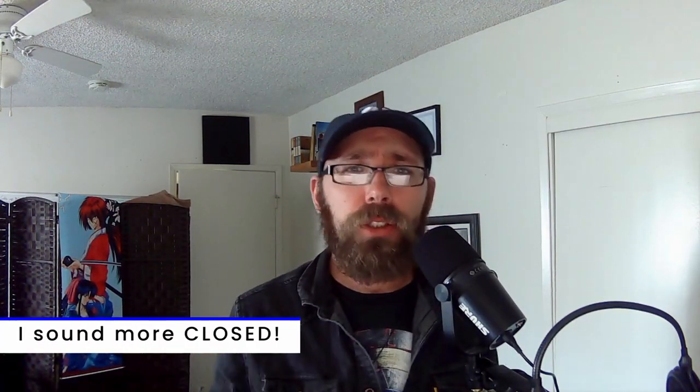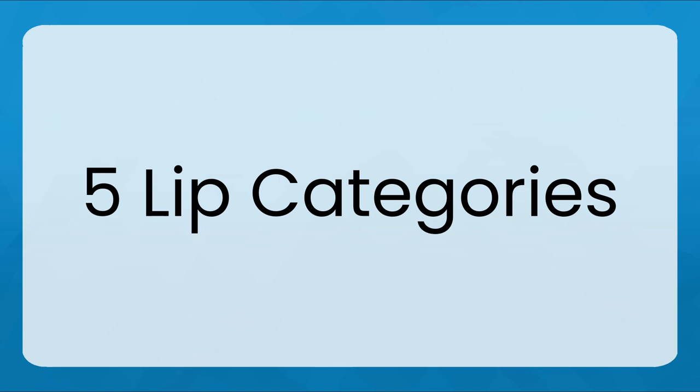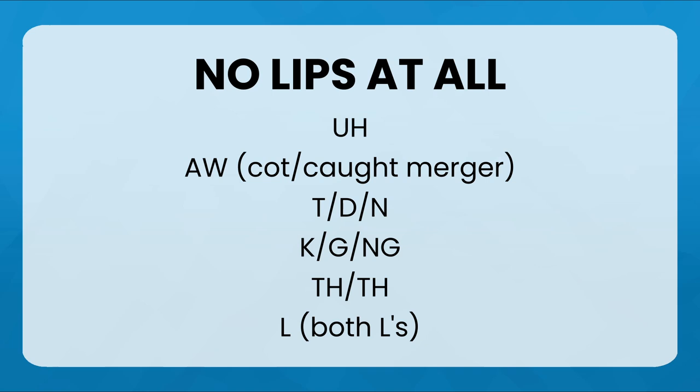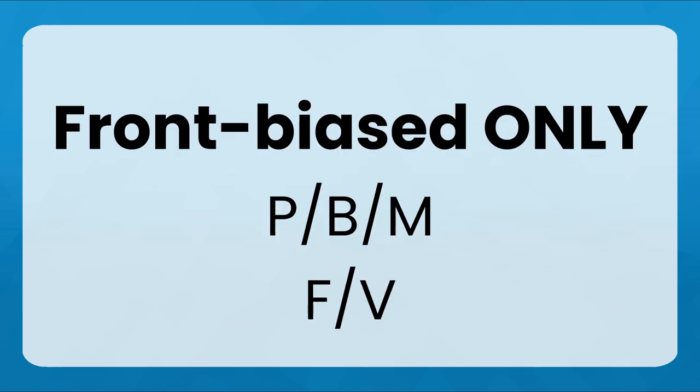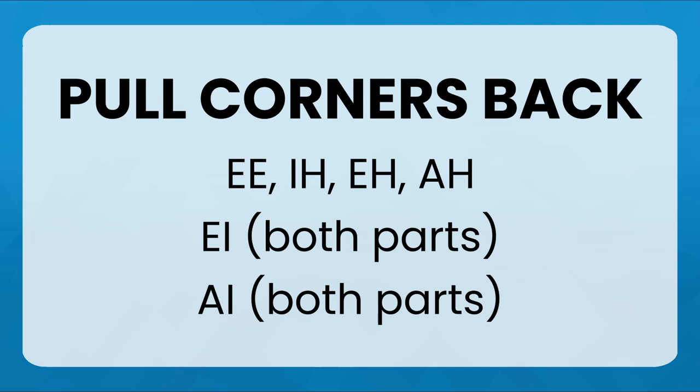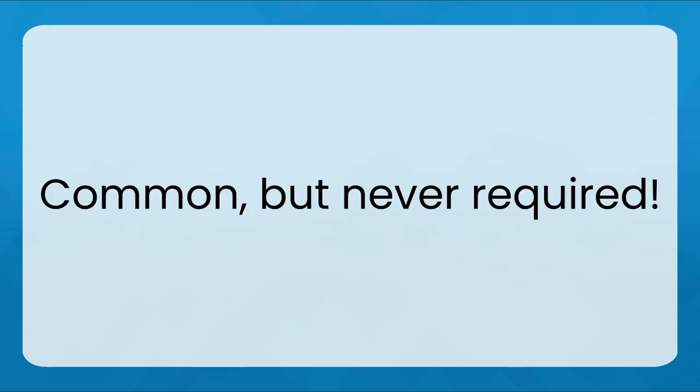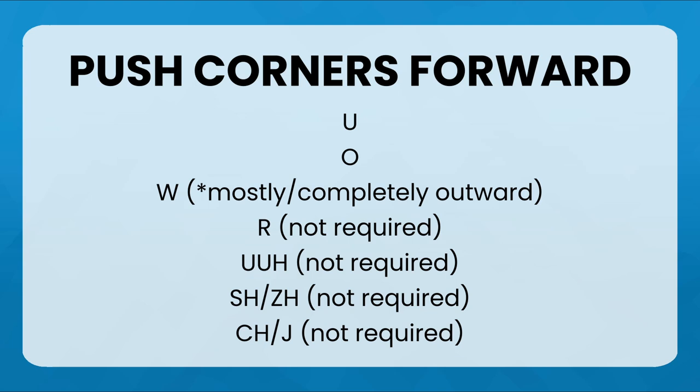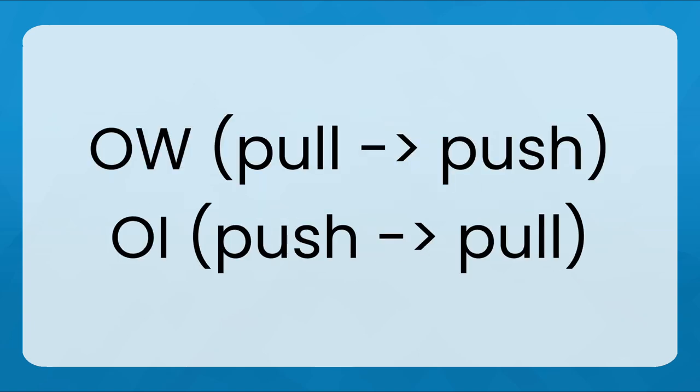Notice that this ties into everything else — if everything is open and relaxed, everything opens up, including the space from the lips. It's like a window: if the window is more closed, things can't get through as much. Even if you just tighten the corner of your lips and keep everything else the same, you'll notice you sound a little bit different. The lips can be broken into five categories: sounds that don't use the lips at all; sounds that are front biased only; sounds that pull the corners (never required); sounds that push the corners forward (some required, always front biased); and 'au' and 'oi,' which are a special combo group.